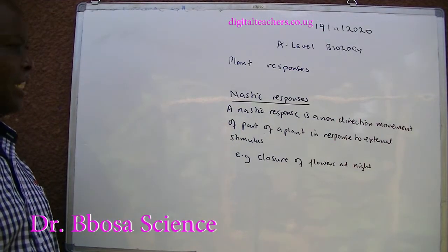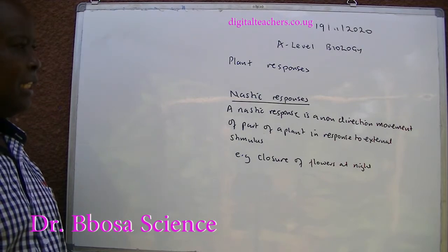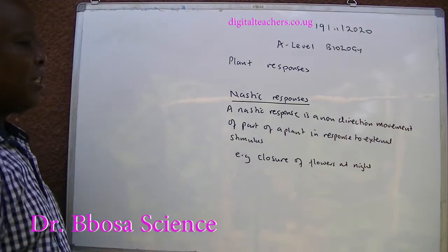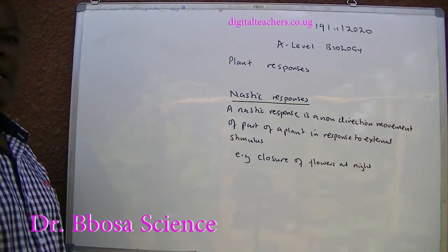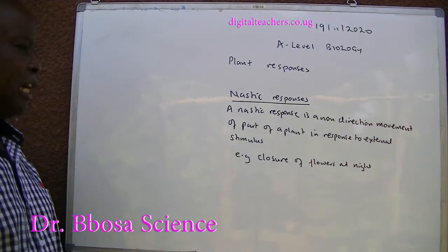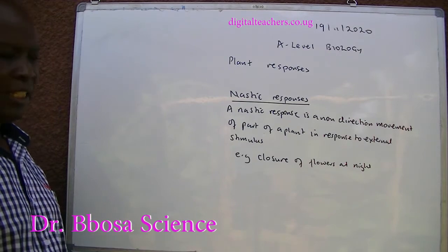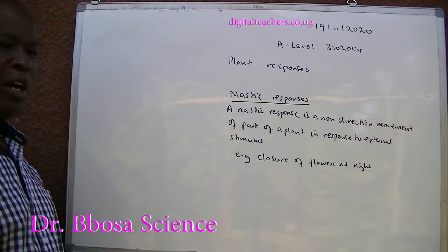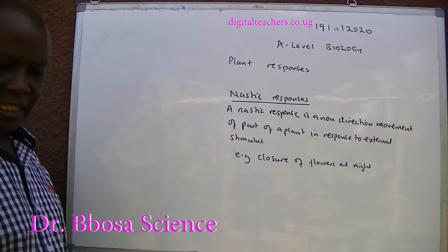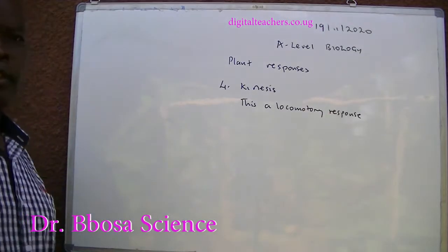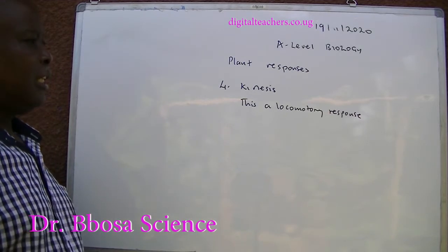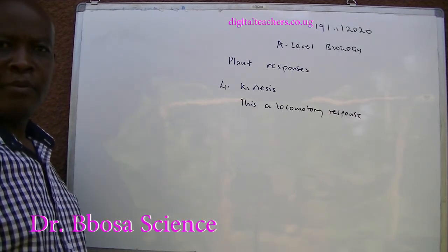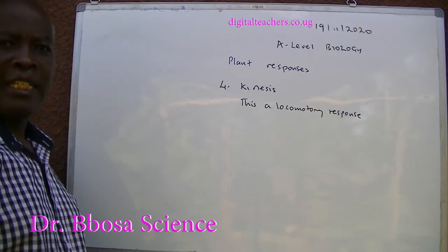Nastic response is a non-directional movement of part of the plant in response to an external stimulus. For example, closing of flowers at night. For kinases, this is a locomotory response, more common in animals.